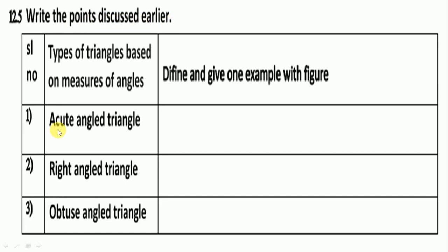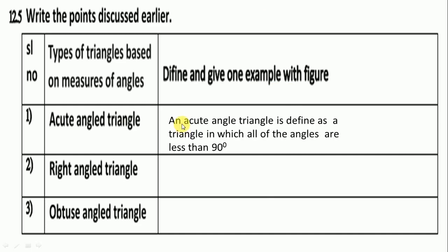Here is the first: acute angle triangle — we have to define it and give one example with a figure. An acute angle triangle is defined as a triangle in which all of the angles are less than 90 degrees, and we draw an example like this.